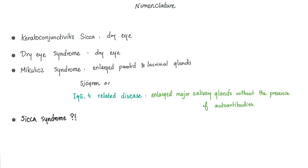Regarding nomenclature: keratoconjunctivitis sicca is just a fancy term for dry eyes — it does not include dry mouth, arthritis, dyspareunia, or other features. Dry eye syndrome is another name for just dry eyes. Mikulicz syndrome refers to enlarged parotid and lacrimal glands, which can be caused by many things including Sjogren's and IgG4-related disease. IgG4-related disease should be considered when a patient has enlarged major salivary glands without anti-SSA or anti-SSB antibodies. Sicca syndrome — some consider it equivalent to Sjogren's, others define it as only dry eyes and dry mouth without inflammatory arthritis.